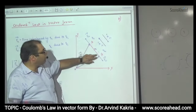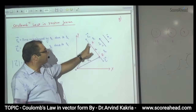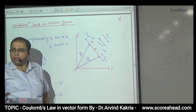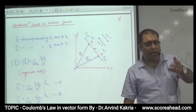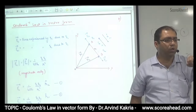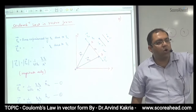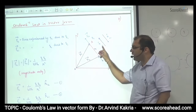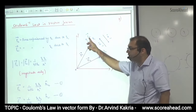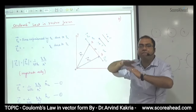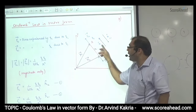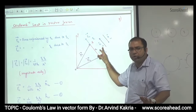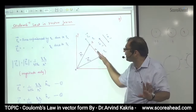Now, if I go from B to A, or talk about F12 vector, the direction of F12 is this way. Normally, vectors can be represented using unit vectors — I cap, J cap, K cap. But since I don't know the exact direction here, I assume my own unit vector. So R12 cap represents the direction of F12, and R21 cap represents the direction of F21.